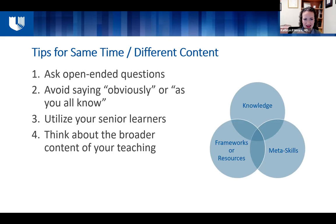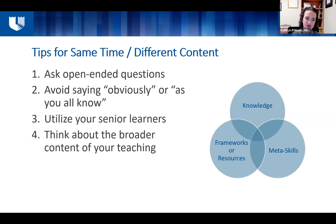Avoid saying 'obviously' or 'as you know' — this can be really isolating for junior learners or even senior ones who may not have encountered that information before. Try to be as inclusive as you can. Utilize your senior learners: you have a senior resident or a fellow, make them teach — this helps them learn the information better themselves, and it helps them learn to teach. Finally, think about the broader context of your teaching: knowledge-based learning, frameworks like national recommendations, and meta skills like how to call a consult.